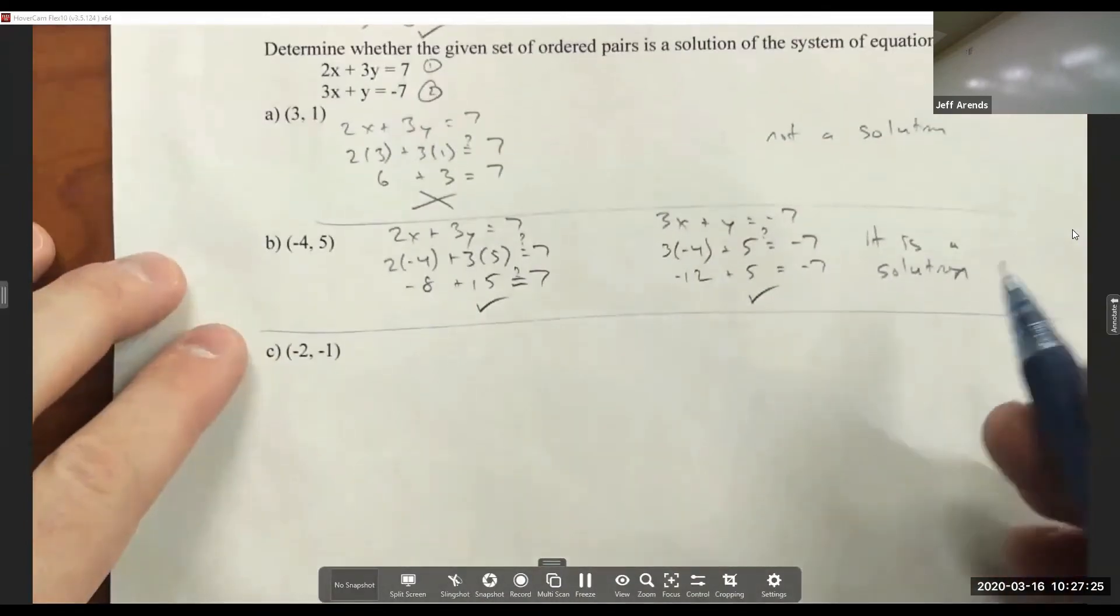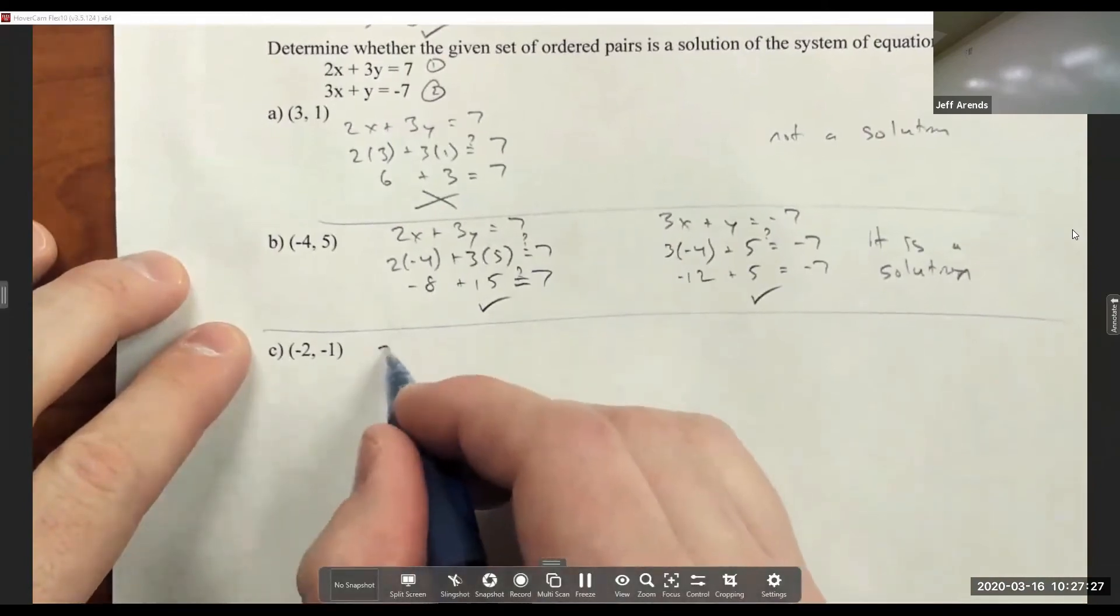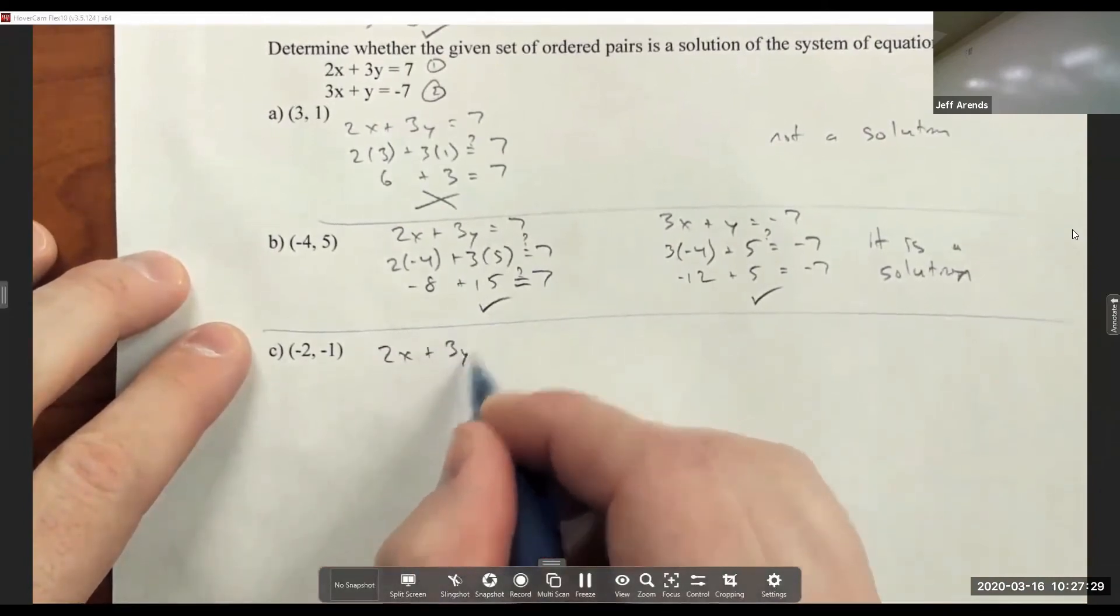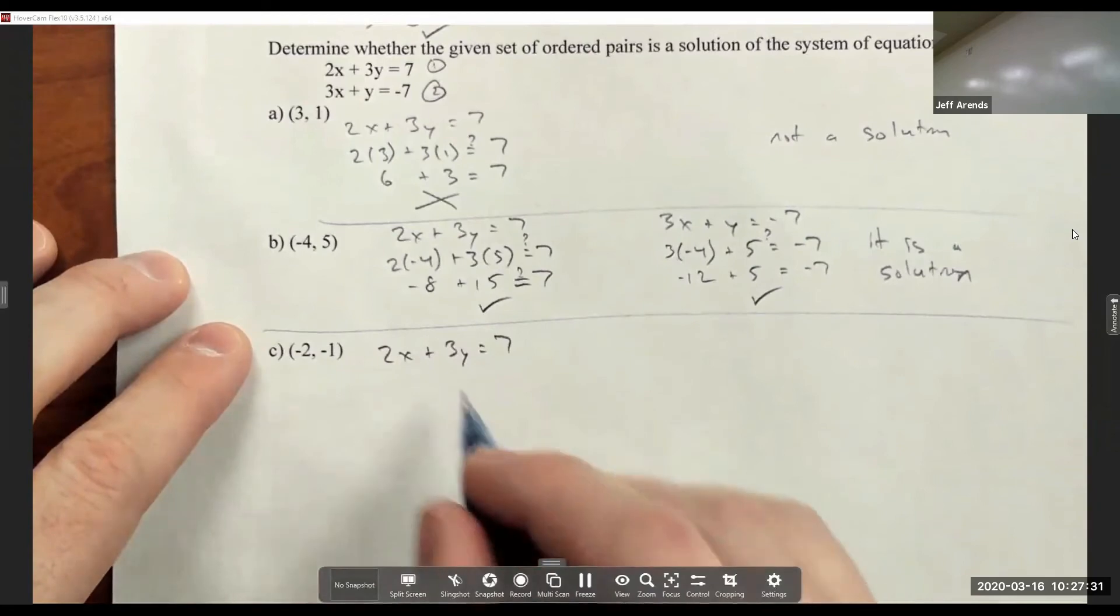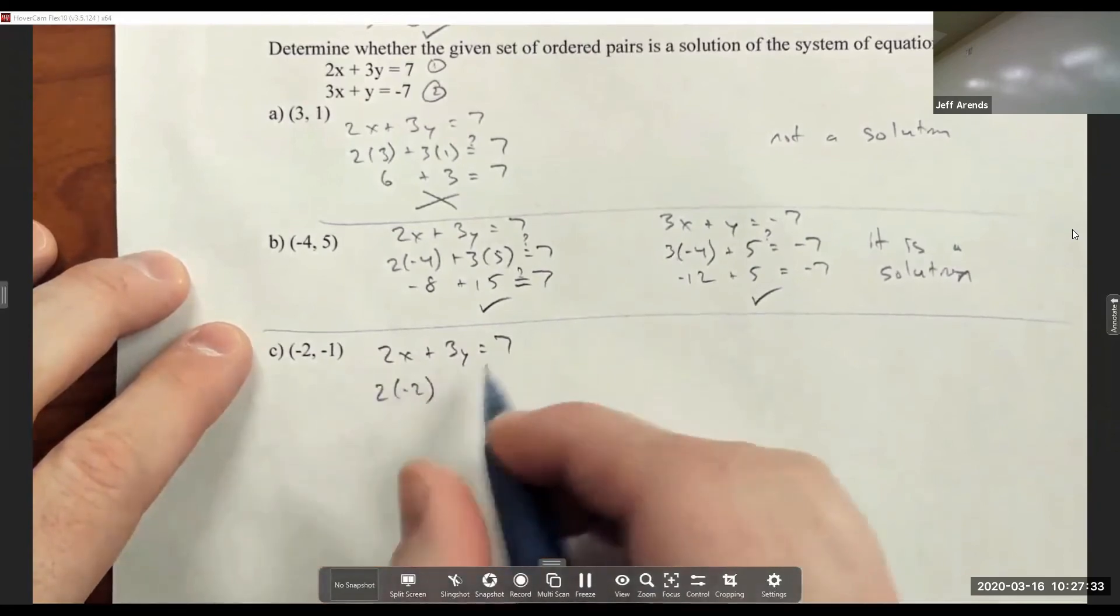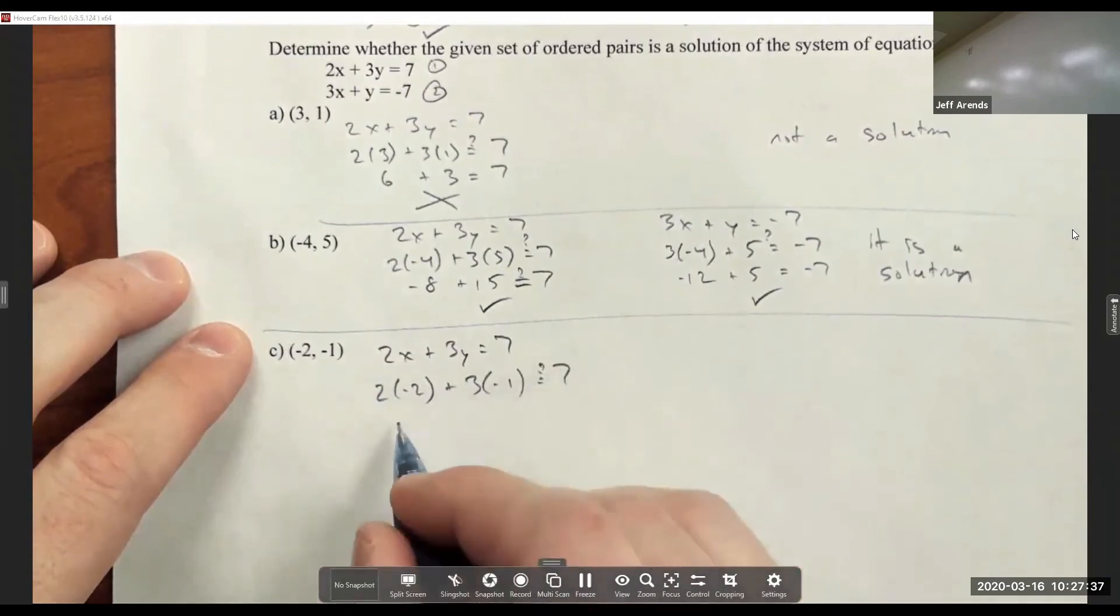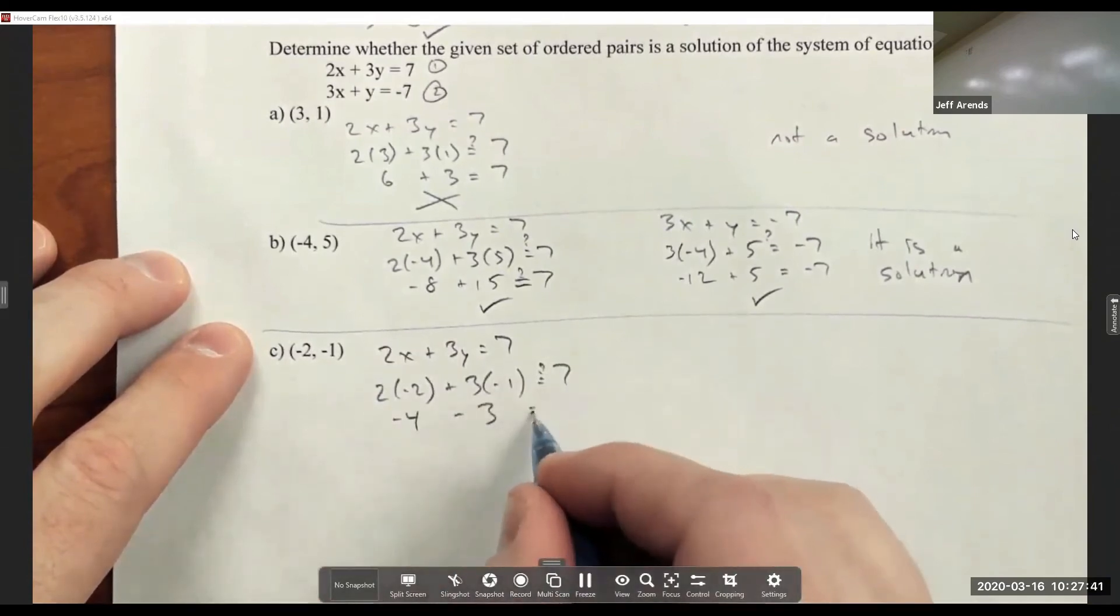And third point here, 2x plus 3y equals 7 becomes 2 times negative 2 plus 3 times negative 1 question mark equals 7. That's negative 4 minus 3 equals 7.